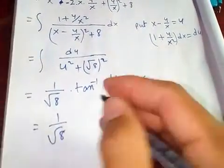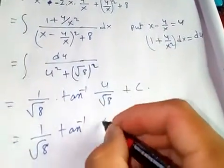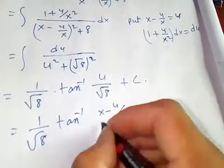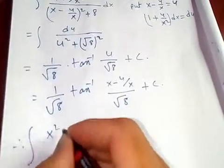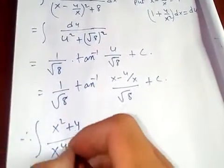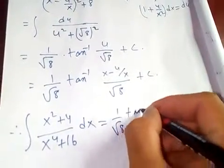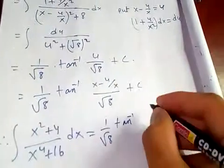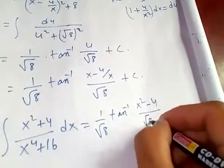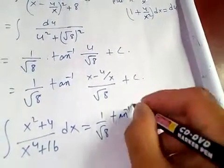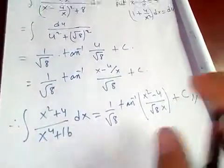This gives (1/√8) times arctan(u/√8) plus C. Substituting back, u = x - 4/x, our final answer is: the integral of (x² + 4) over (x⁴ + 16) dx = (1/√8) · arctan((x² - 4) / (√8 · x)) + C. This is our required answer for this integral.